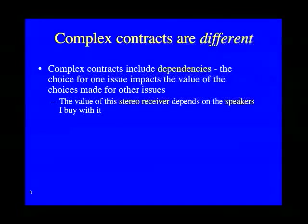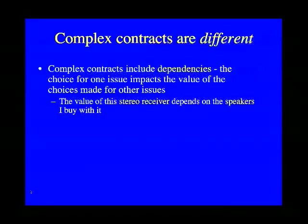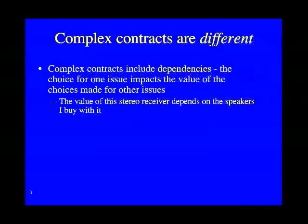But complex contracts are different. Complex contracts include dependencies, which means that the choice made for one issue in the contract impacts the value of a choice made for some other issue. For example, consider a contract with two issues: the stereo receiver you buy and the speakers you will buy. The value of any given stereo receiver will depend on which speakers you buy with it, because they are in some way dependent.